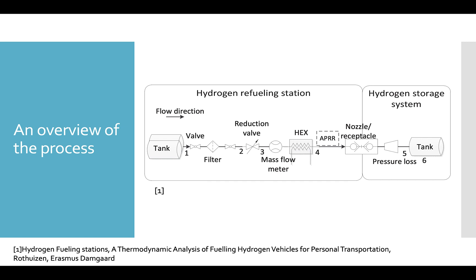Let's go through an overview of the process. This is a diagram of the different components of a hydrogen refuelling station. To the left is the actual refuelling station, and to the right we have the hydrogen storage system, which is essentially the vehicle's hydrogen storage system — that's the vehicle. When we start the fueling process, the hydrogen in the left tank is going to start flowing to the right.